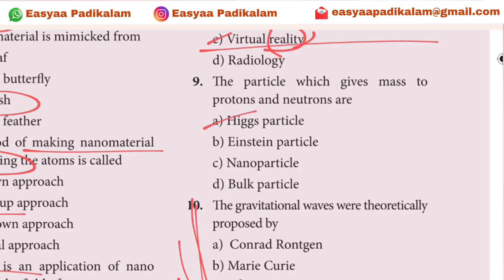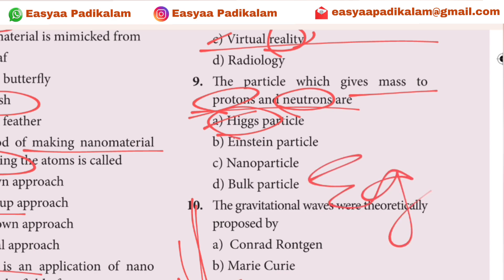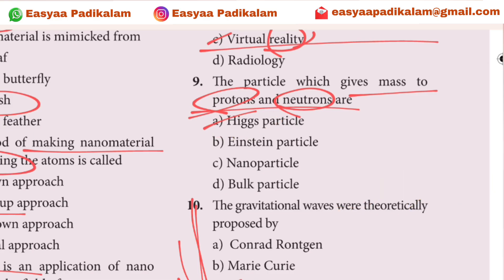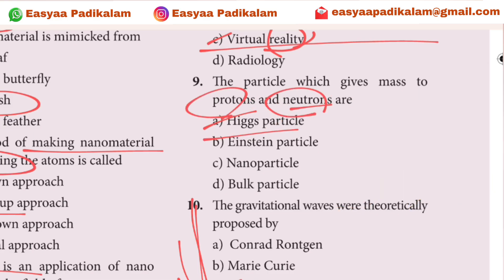Ninth question: The particle which gives mass to protons and neutrons. There is Higgs. What is Higgs? Higgs gives mass. Higgs particle — proton, neutron. Higgs particles.